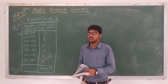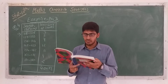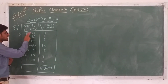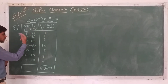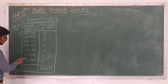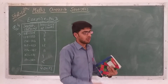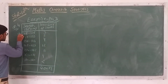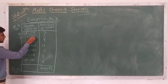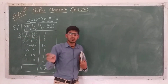Next, Question 4, Exercise 14.3: The lengths of 40 leaves of a plant are measured correct to the nearest millimeter and the data obtained is represented in the following table. Find the median of the leaves. The length in millimeters and number of leaves are given. We can observe that the classes are not continuous — the first class is 118 to 126 and the next is 127 to 135, so there is a gap of 1 between 126 and 127.